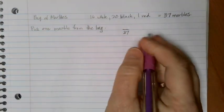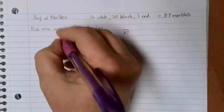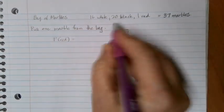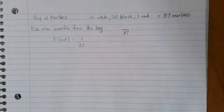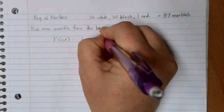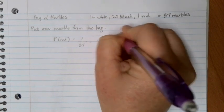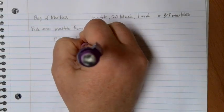If we take a look at a couple of vocabulary pieces here, let's suppose that I want to find the probability of picking a red marble. There are 37 marbles in the bag, and one of those marbles is red, so there's only a 1 in 37 chance that I will end up picking the red marble. If I divide that, I get 0.027, or a 2.7% probability of being able to pick the red marble from the bag.